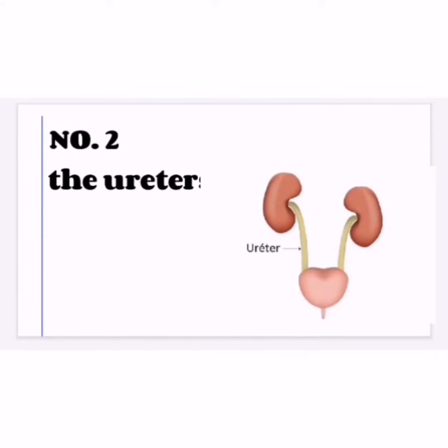Number two: the ureters. These are two tubes that carry urine from the kidneys to the urinary bladder.